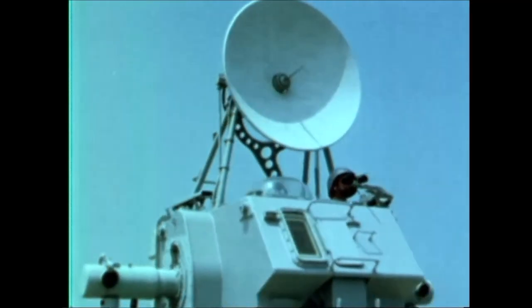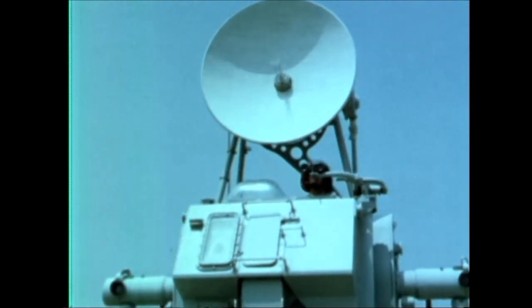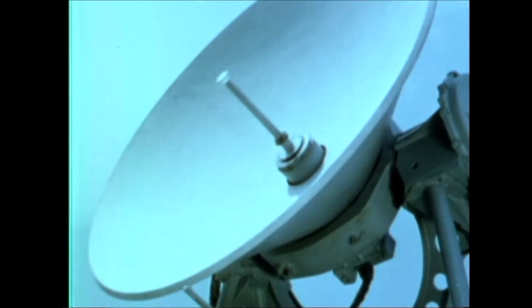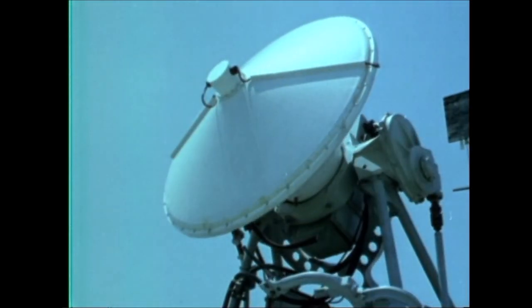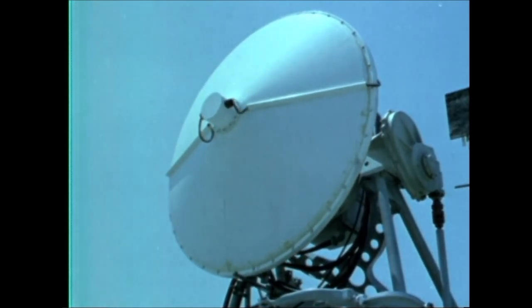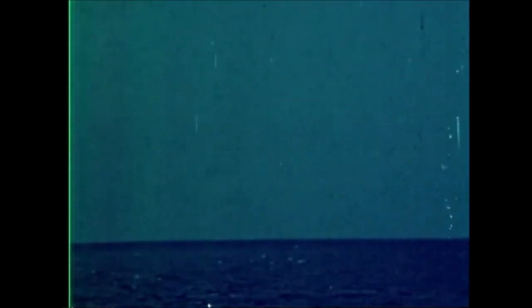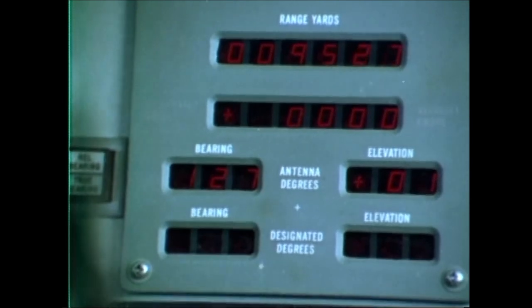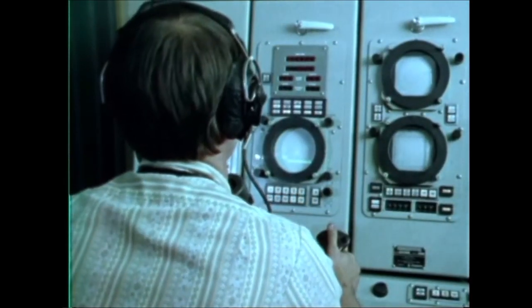The conical scan radar used in the old fire control system was replaced with a completely new monopulse radar. The new radar not only provided greater accuracy but also low-altitude acquisition and tracking capability that the old radar never had. This was made possible by incorporating a low target mode that eliminated the usual interference from surface reflection.